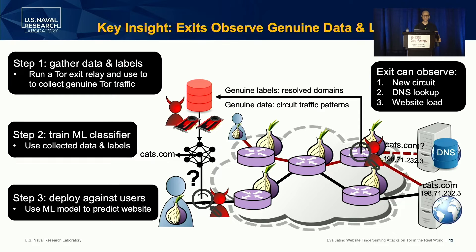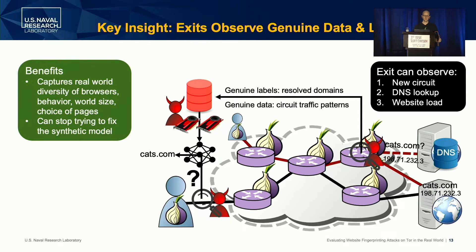This is what I call the genuine model. The benefits should be clear. It captures the real-world diversity of all the browsers, the behavior of the users on the network, the world size, which URLs users are visiting, if they're using tabs, et cetera. It captures the natural diversity because we're measuring the real network. And it allows us researchers to stop trying to fix all of the problems with the synthetic model and just focus on the actual threat in the real network.